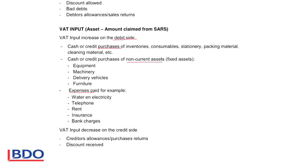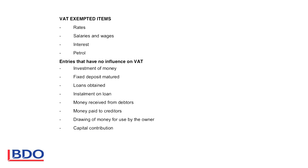VAT input can decrease on the credit side because the asset decreases on the credit side. This occurs for creditors allowances — when you send goods back you can no longer claim VAT on those goods — and also when you receive a discount. VAT-exempted items include rates paid on your property, because rates are already a tax. Salaries and wages are exempted because you pay PAYE on them. Interest is exempted — whether you pay or receive interest, there is no VAT. Petrol also has no VAT, as many other taxes are already charged on it.